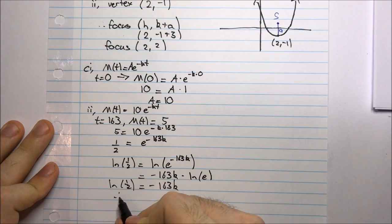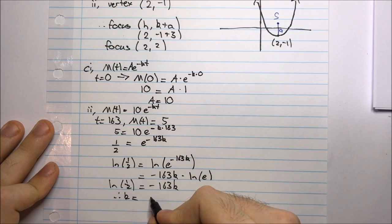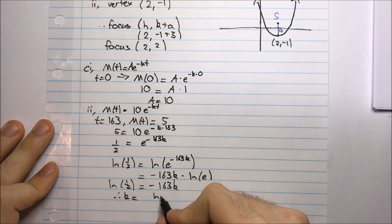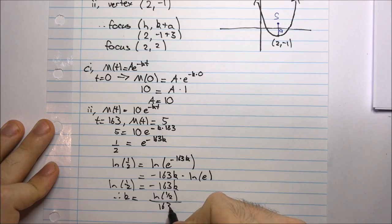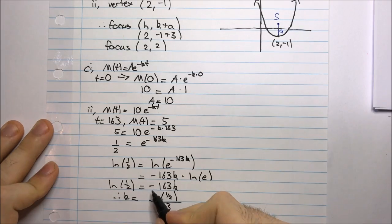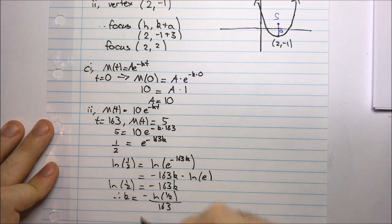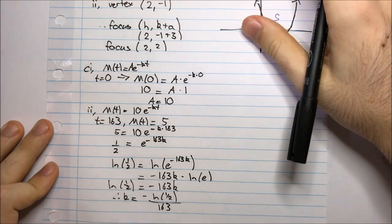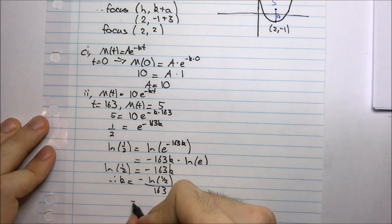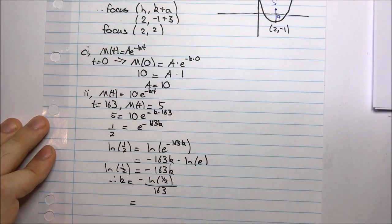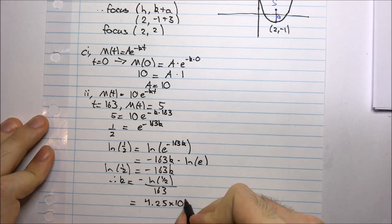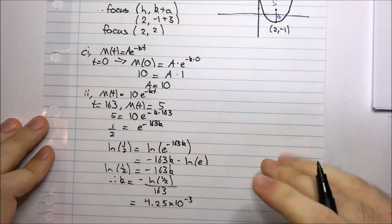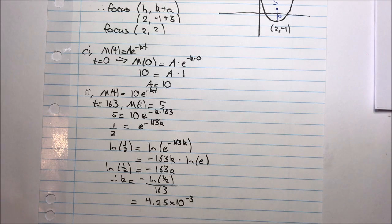Therefore k equals ln(1/2) divided by negative 163 — putting the negative at the top. Working this out, I should get approximately 4.25 times 10 to the negative 3. You might want to check that for yourself. That's the end of part c.